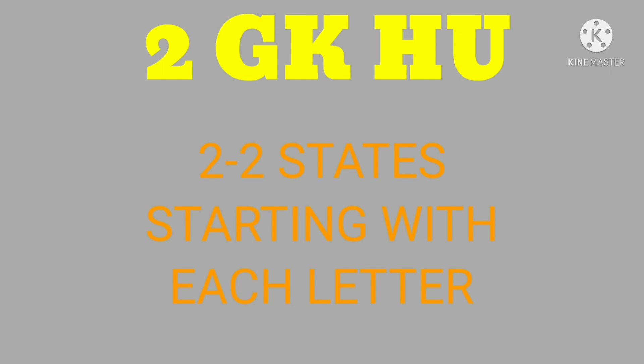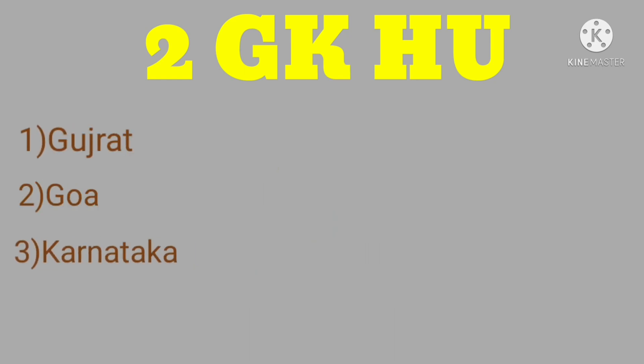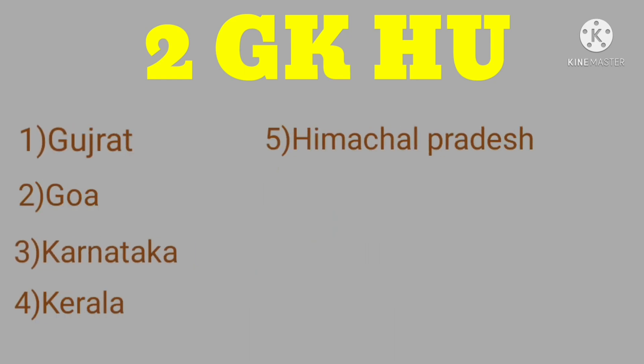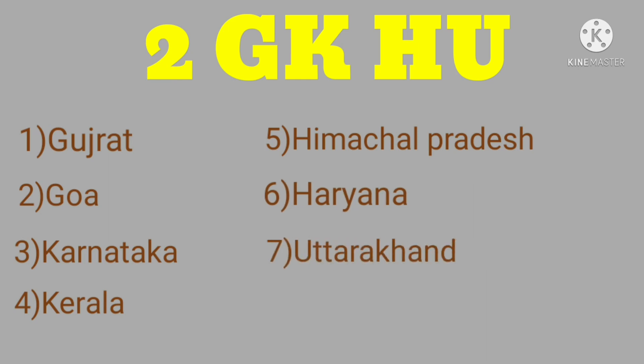2GK Hoo means there are two states starting with each of these letters. They are Gujarat and Goa, Karnataka and Kerala, Himachal Pradesh and Haryana, Uttarakhand and Uttar Pradesh.